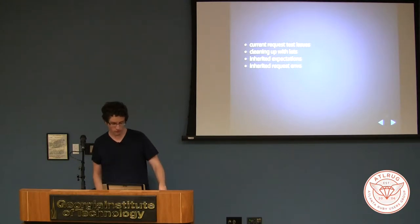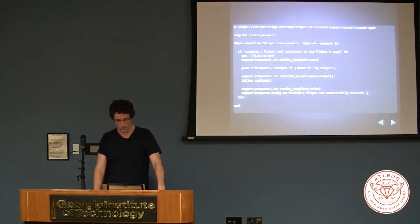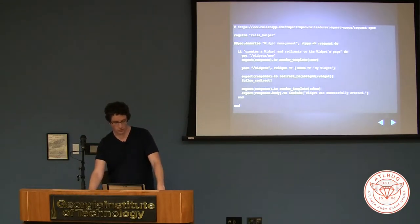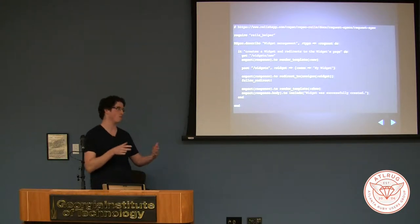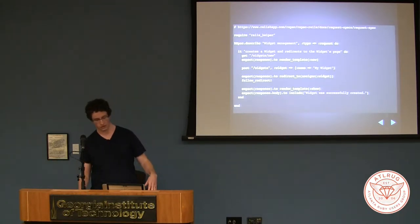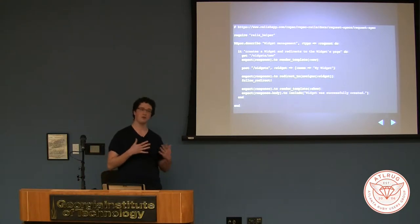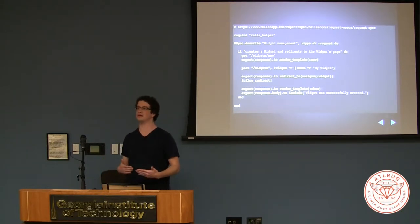I'm going to talk about the current testing problems that we have, cleaning it up and what we get on the other side, and a gem that I wrote that details all of the different patterns we're using now. This is the current version of what's called request tests in RSpec Rails — straight from the docs. This is an integration test, meaning you step through multiple sequences and the whole sequence is what you're actually testing. You're hitting a page, posting a form, following redirects — which could be used to test a JSON API, but for the most part you're not doing that on JSON. A unit test is actually a better pattern for a JSON API.